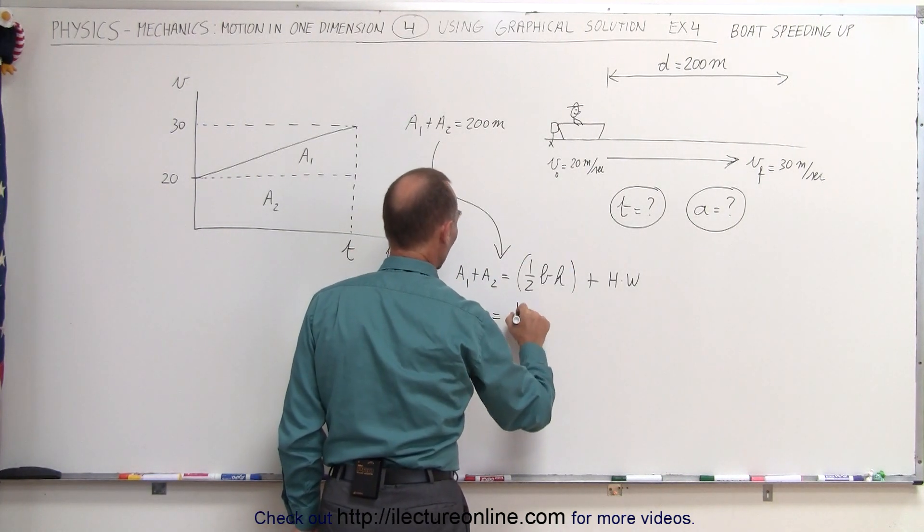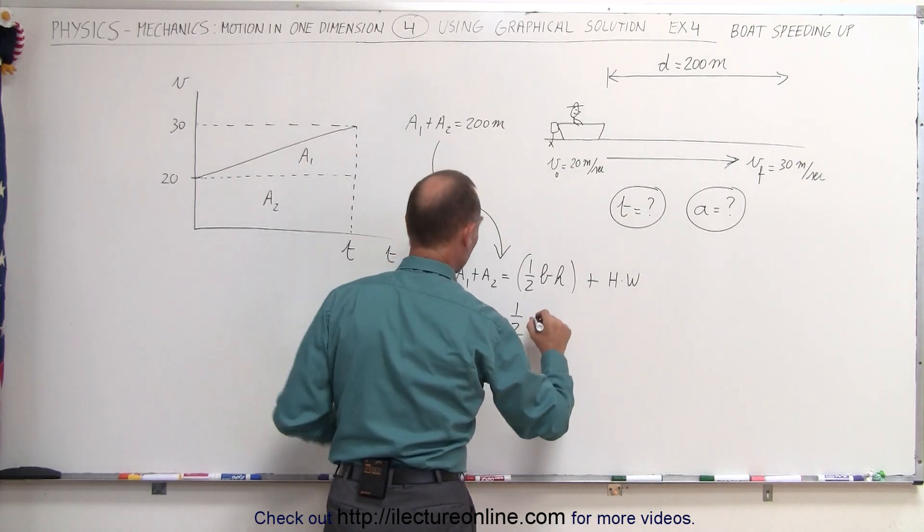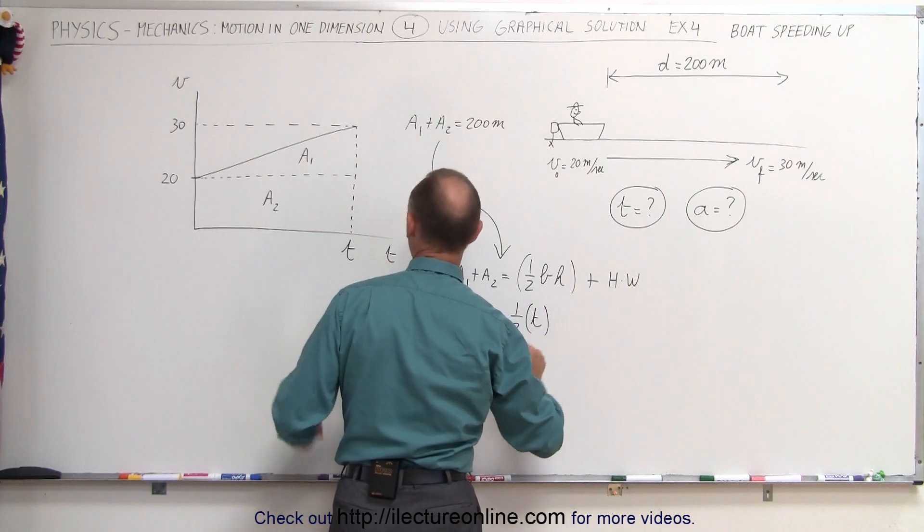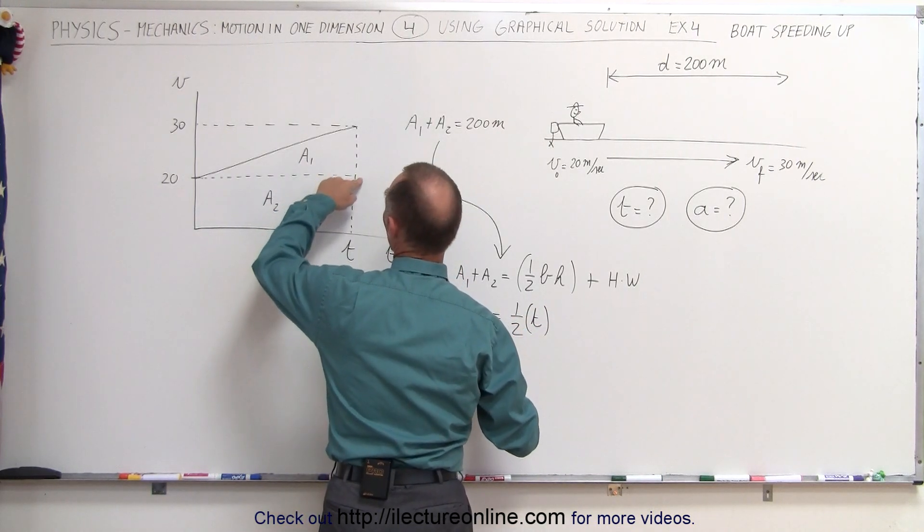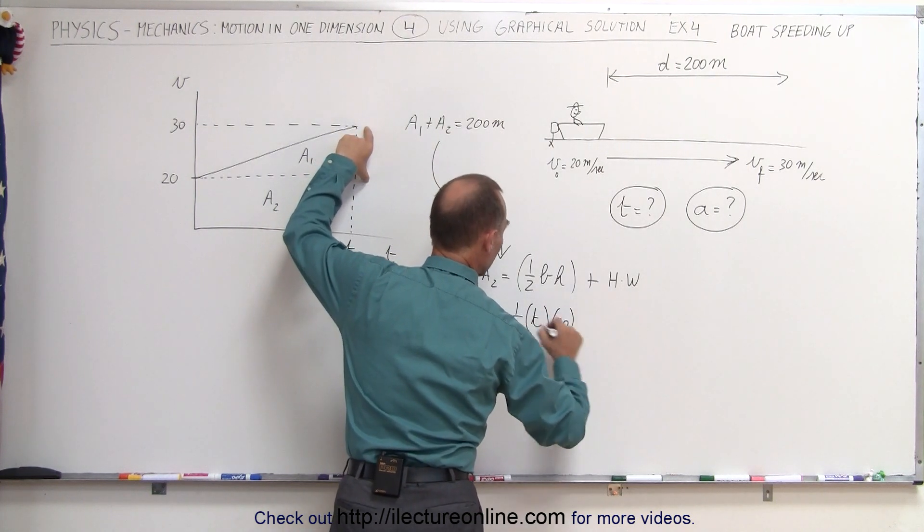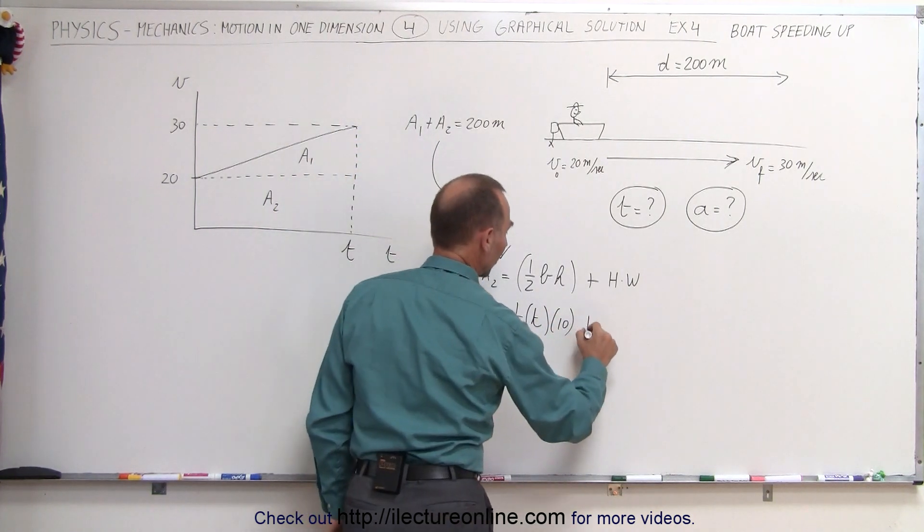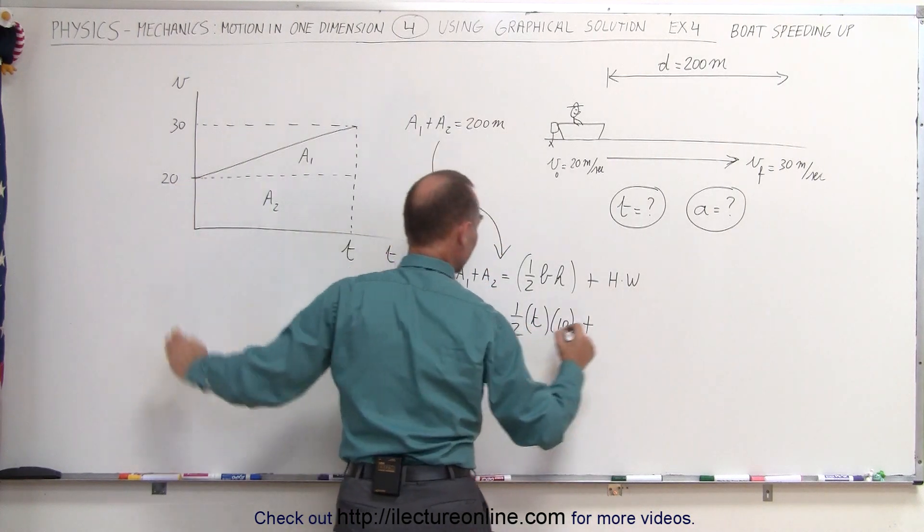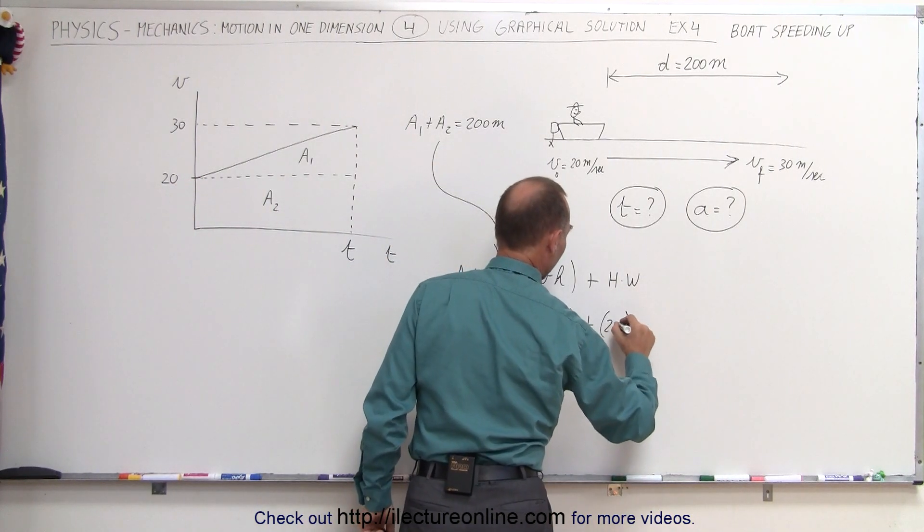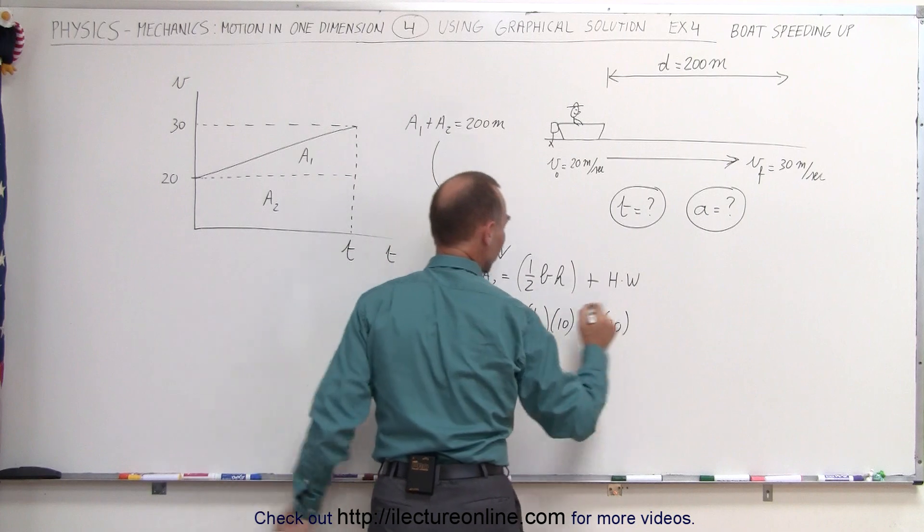The total area here would be 200 meters. So 200 meters is equal to 1/2 times the base, that would be the time that it took, times the height. And the height would be from 20 to 30, so it's a difference of 10 meters per second plus the height of the rectangle which is 20 times the width of the rectangle which again would be the time that it took, t.